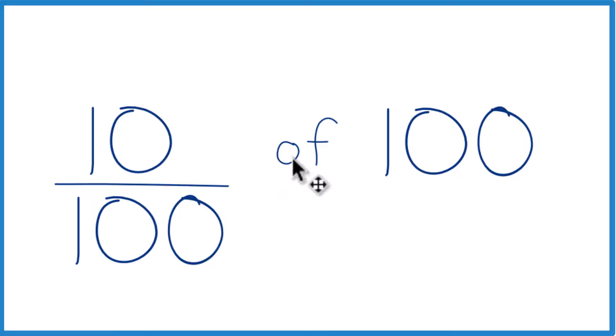That's 10%. The of, we're going to call that multiplication. So you probably can recognize that 10 divided by 100 is 0.1 and 0.1 times 100, that would give you 10. So that's one way to do it.